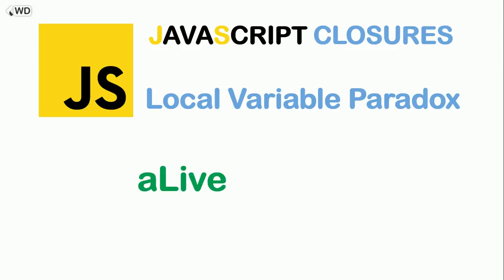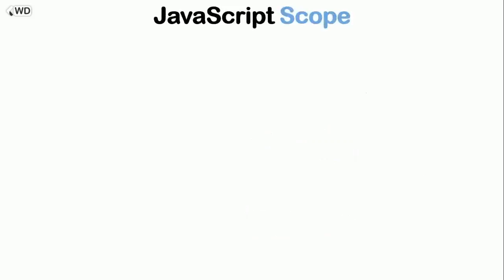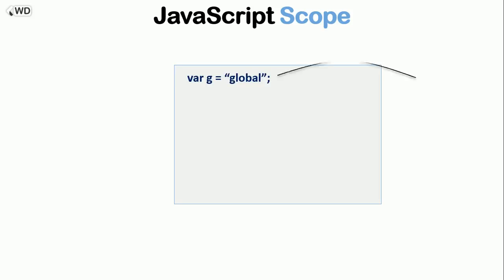Is the local variable alive or dead? This is why I call it the local variable paradox. Before we say what a closure is, we have to know a few things — one of them is JavaScript scope. Let's say I open the window in my web browser and I created a variable g equals 'global'. This variable is called the global variable, and it is accessed by any script or any function in the window.